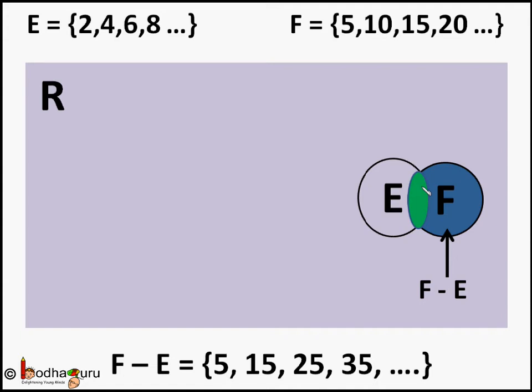So F minus E set includes numbers like 5, 15, 25, 35 and so on. So it has numbers which are multiples of 5 but does not include numbers like 10, 20, 30 and so on which are even numbers also.